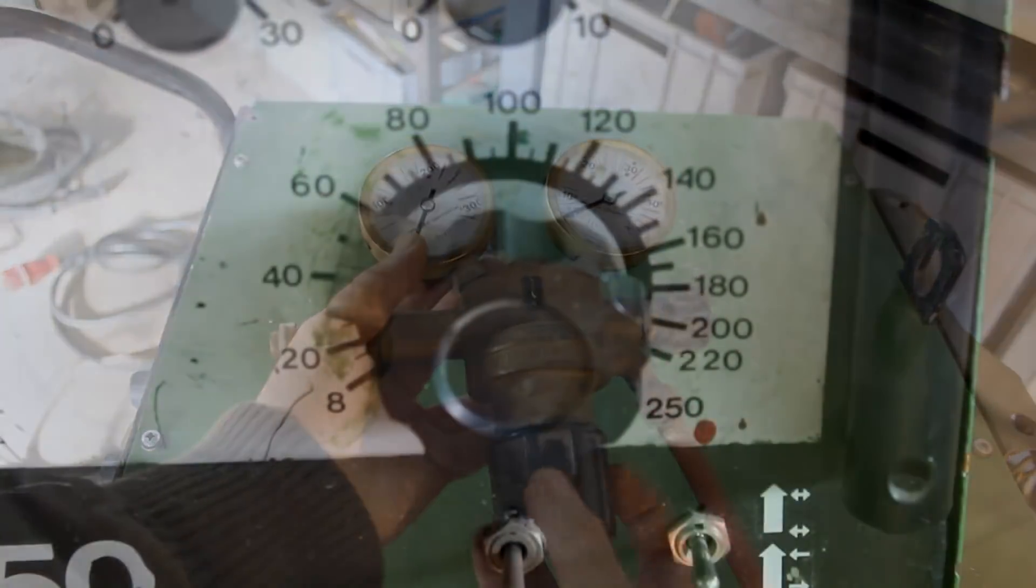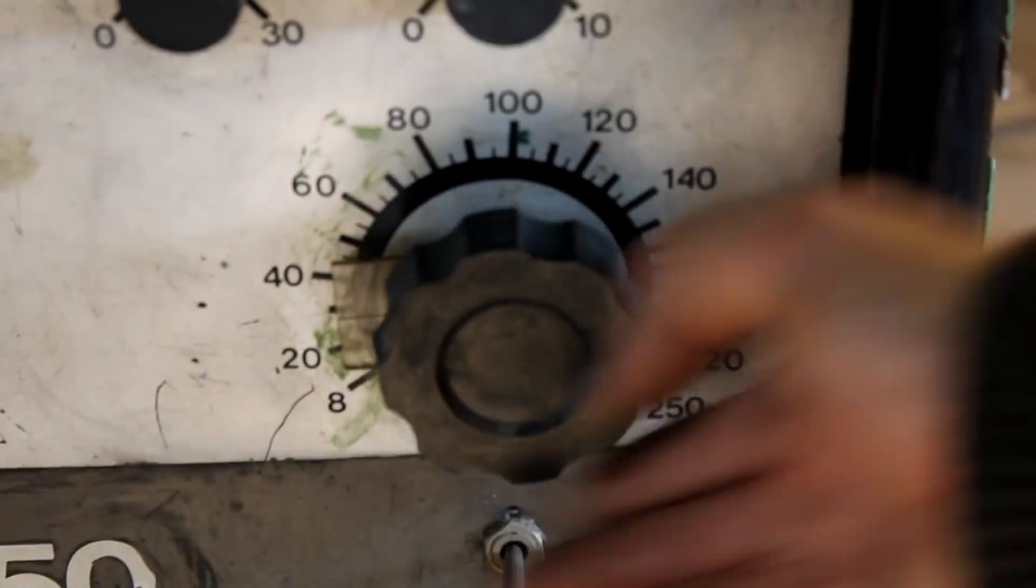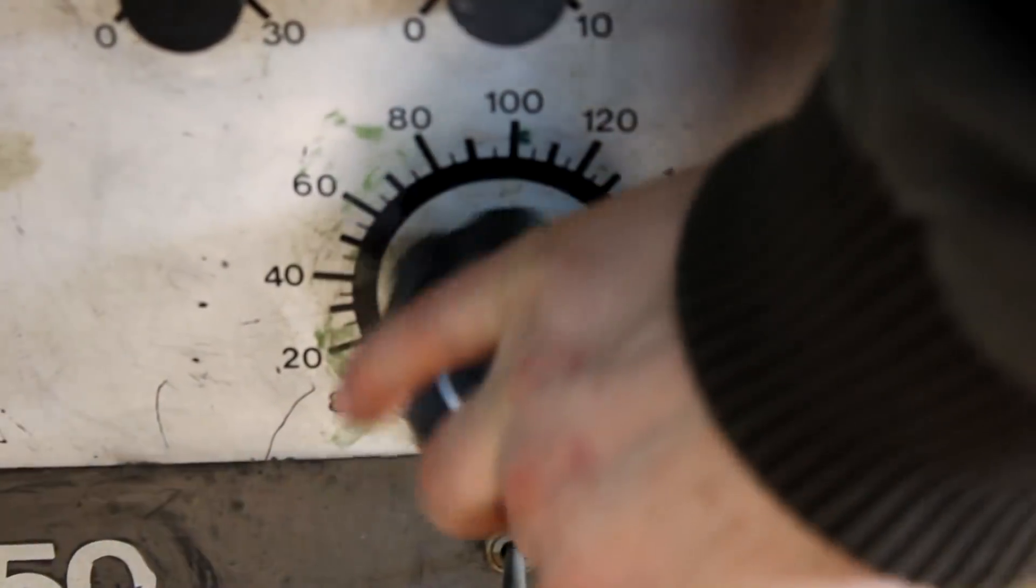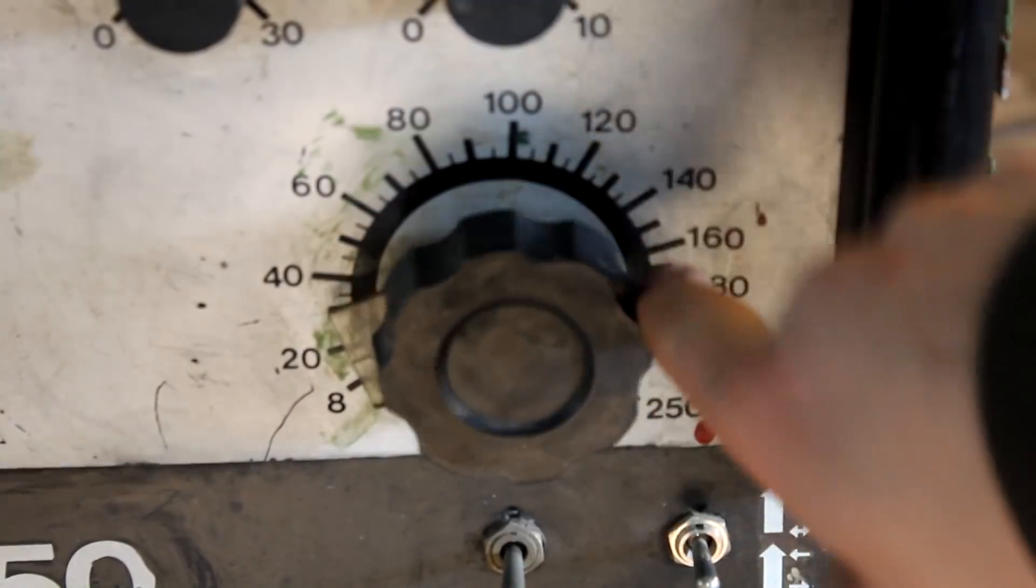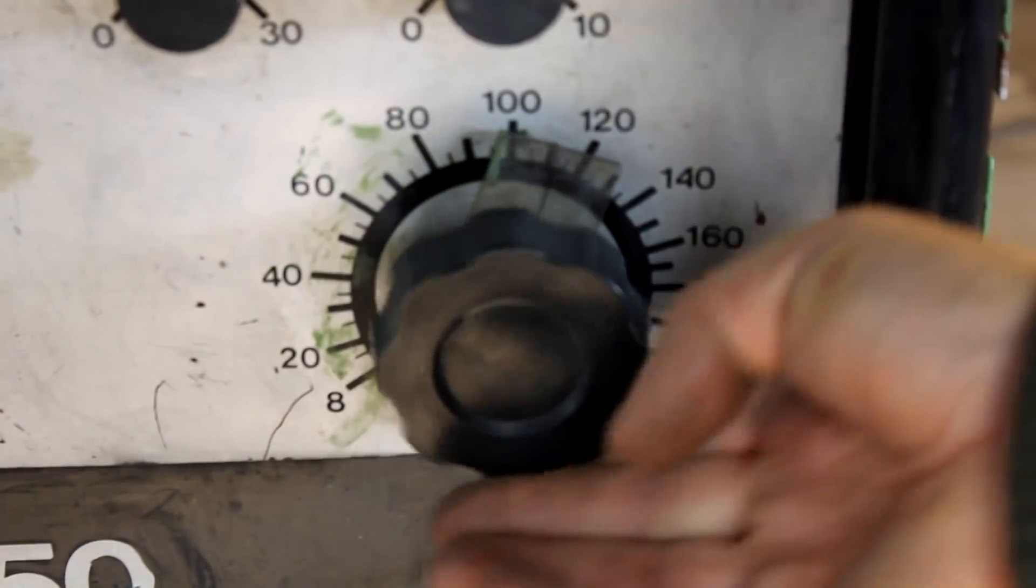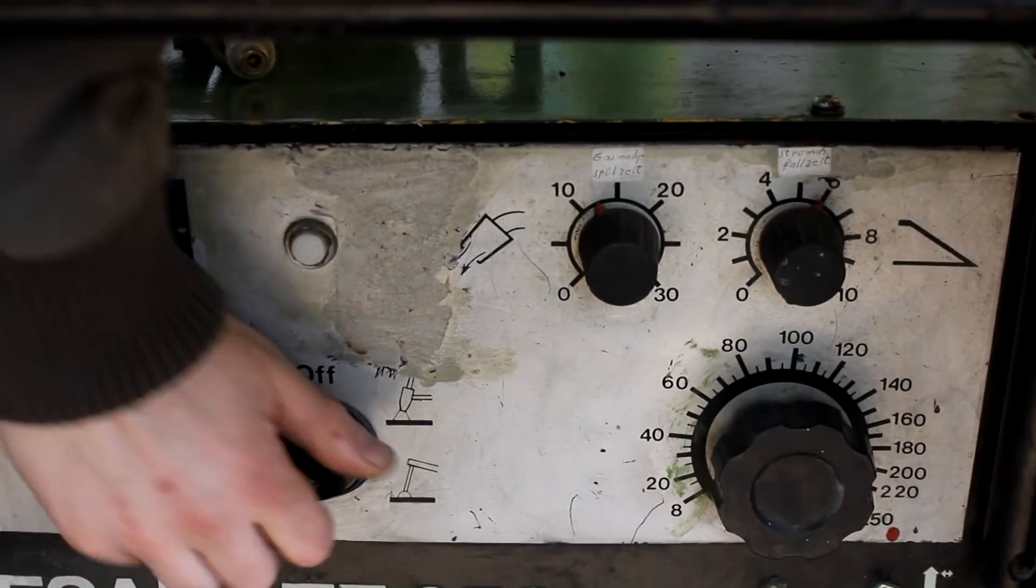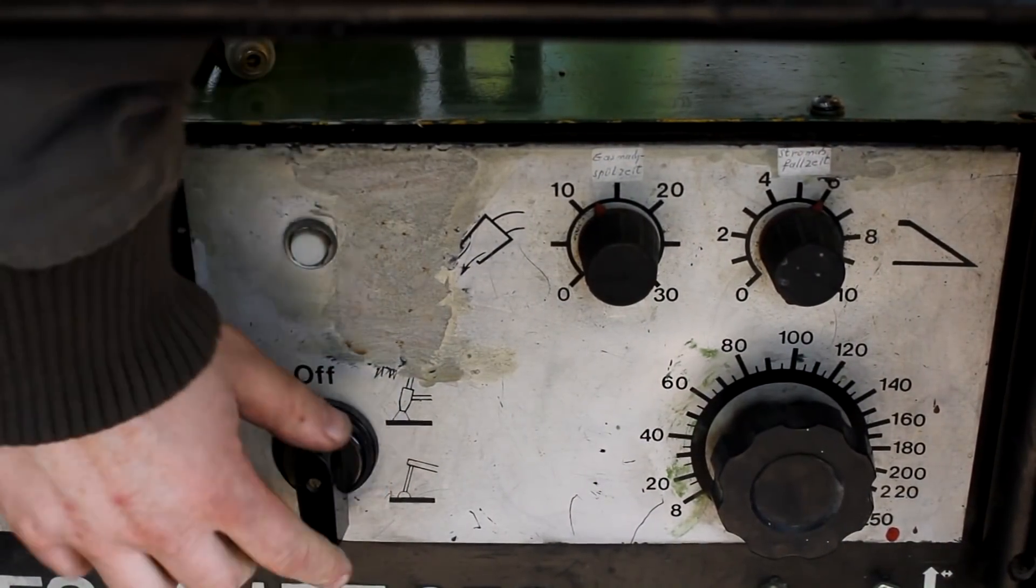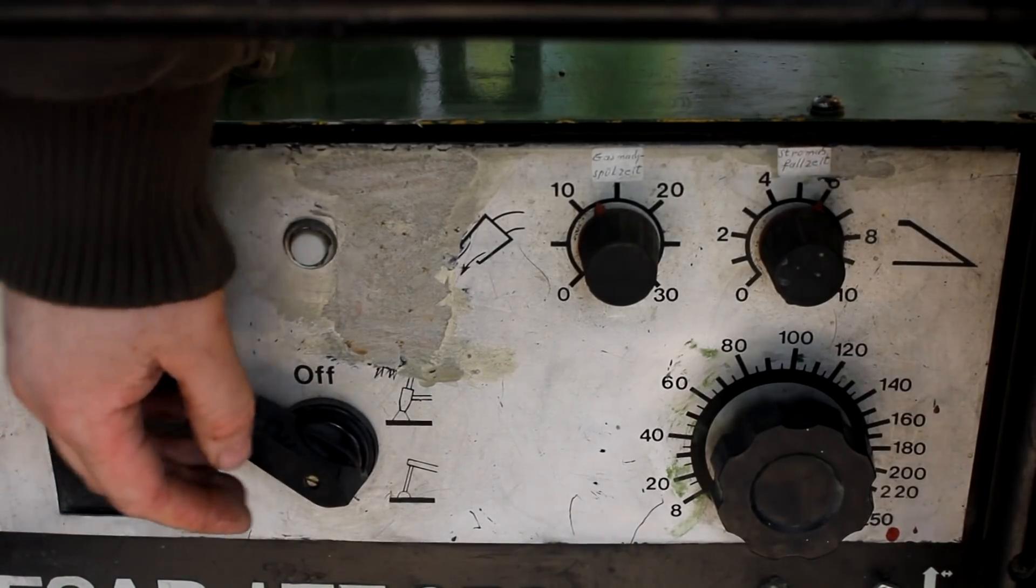This large knob here can be used to adjust the welding current between 8 and 250 amps. And here you can see that this indicator moves much slower than the rotation of the actual button. And that shows us that this is a multi-turn pot. And this switch here can be used to turn the machine on and then select between MMA and TIG.